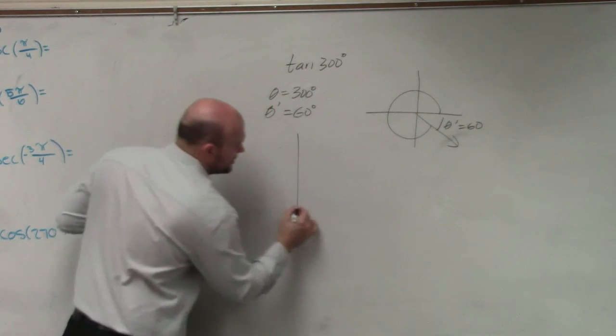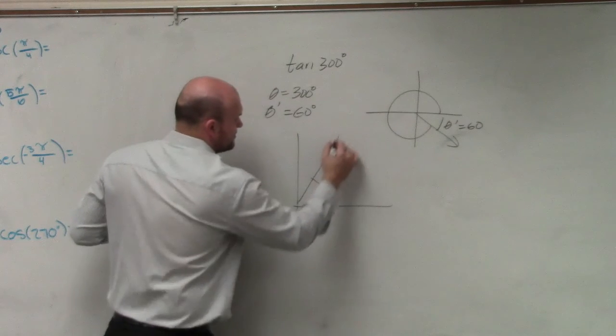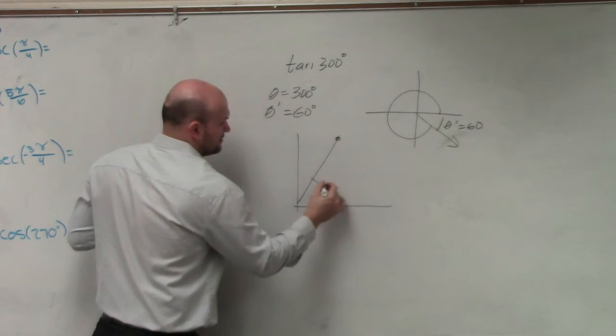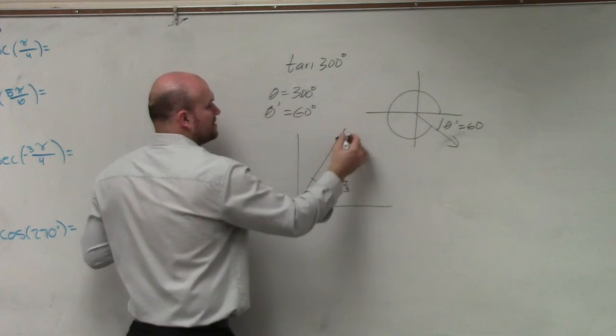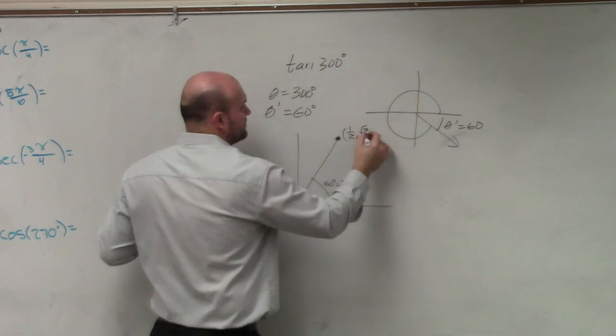So if I think about my unit circle, and I say, oh, 60 degrees. That was the one up there. 60 degrees, or pi over 3. And that coordinate point was 1 half, square root of 3 over 2.